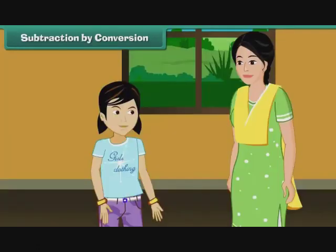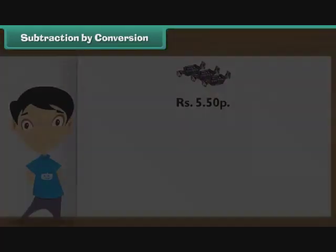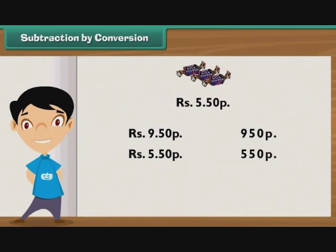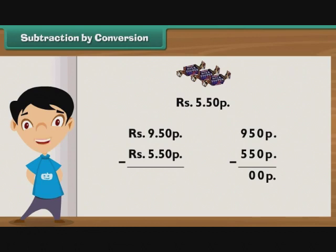So the answer is 66 rupees. Subtraction by conversion. Raveena gets 9 rupees 50 paise from her mother as pocket money. She spends 5 rupees and 50 paise on toffees. What is the pocket money left with her? 9 rupees 50 paise means 950 paise and 5 rupees 50 paise means 550 paise. Write 550 paise under 950 paise and subtract. 0 minus 0 is 0, 5 minus 5 is 0, and 9 minus 5 is 4. So the amount left with Raveena is 400 paise, that is 4 rupees.